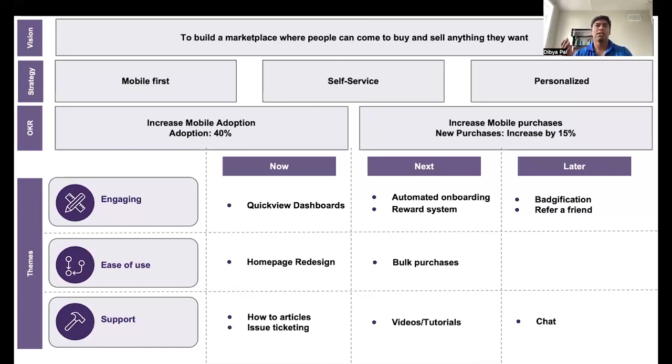As the team did more discovery and understood the customer pain points and the jobs to be done, they clustered the major pain points or opportunities under these themes. In this case, the team found that their product needs to be more engaging, needs to improve on ease of use, and then needs to improve on the customer support. Now the product team comes up with ideas or hypotheses that need to be validated. In the near term, they decide to experiment on, for example, on the quick view dashboards, on the how-to articles, and how they can help resolve issues much faster through issue ticketing. And in a later stage, they would like to look into badgification, gamification to improve engagement, or to focus on chat to improve support. Again, these are hypotheses that need to be validated or experimented.